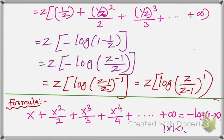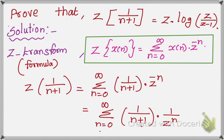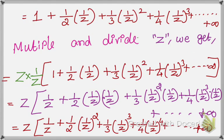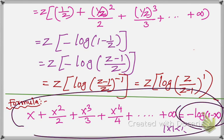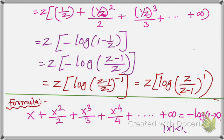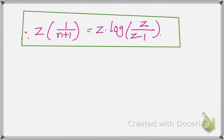We used two formulas. The first is the definition of the Z-transform, which you should memorize. The other formula is the binomial expansion: minus log of (1 minus x) equals x plus x squared over 2 plus x cubed over 3, up to infinity. Using these two formulas, we proved this result. Thank you.